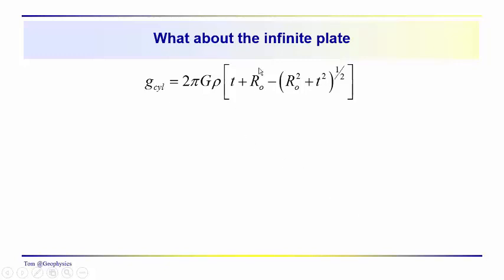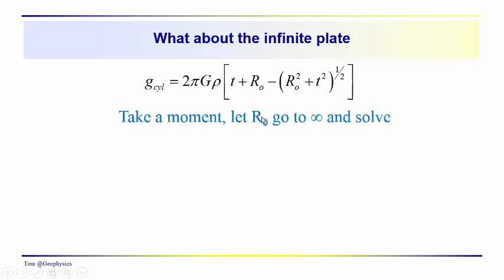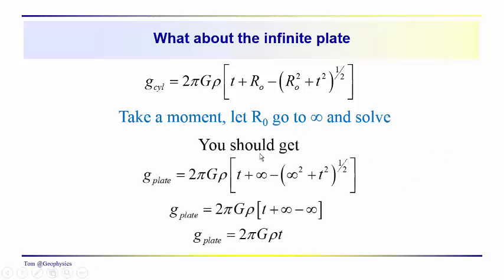What about the infinite plate? The formula for the cylinder standing right on top is what we just derived. Now ask yourself what happens if we let R₀ go to infinity. You should see that infinity squared plus t squared is still infinity. So this turns out to be t plus infinity minus infinity — giving 2πGρt. So there is your plate formula.